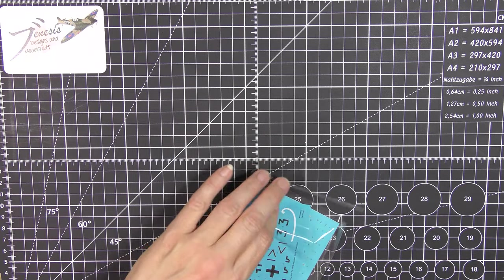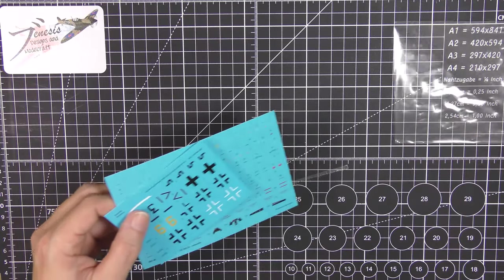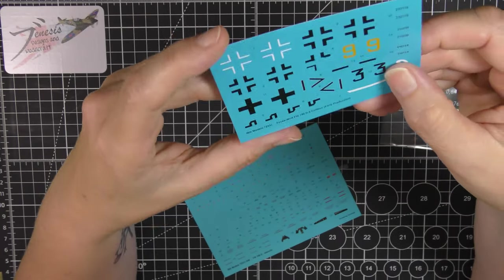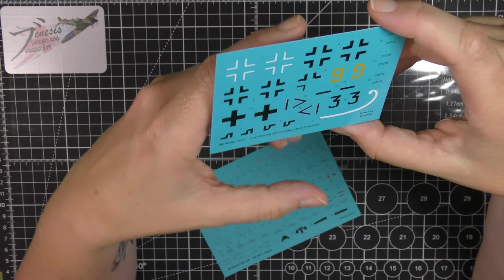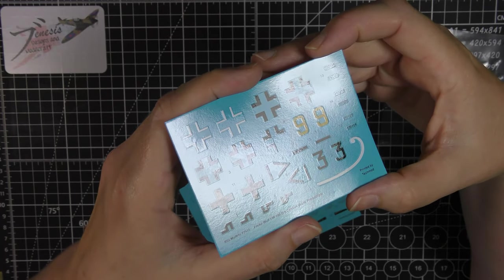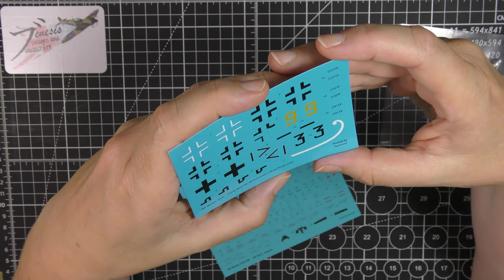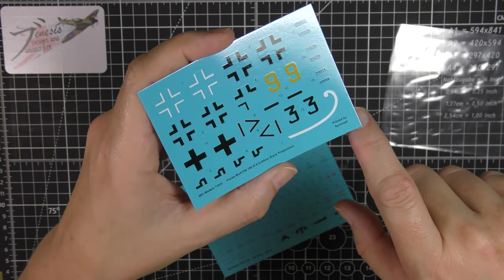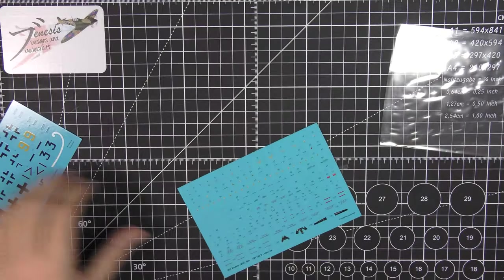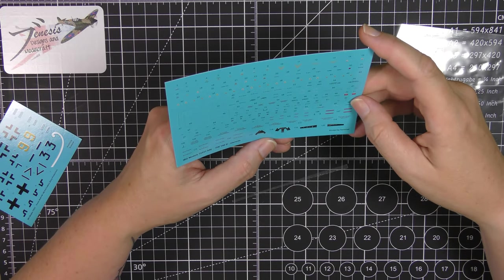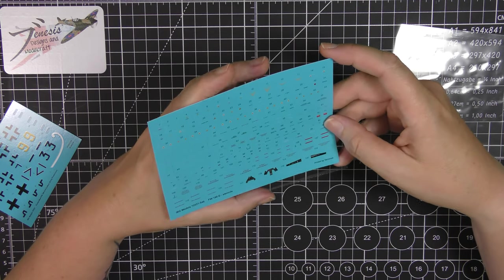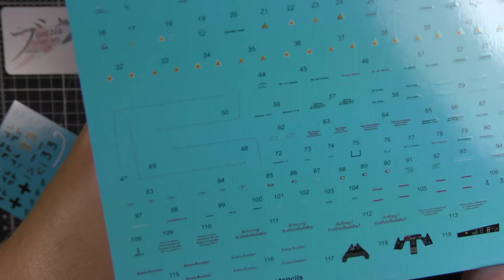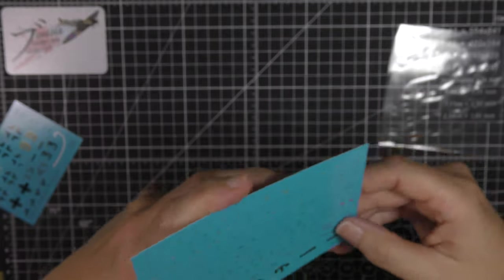Decals themselves then. Quite a comprehensive sheet. Those are your main markings, pretty simple. Obviously swastikas are included but they're in halves to satisfy laws in some places. These decals are printed by Tech Mod. They're really good, very very thin. You may if you're not careful have issues with these kind of curling up on themselves because they're so thin, but all that I've used before have always been very very good. Spinner spiral as well. And then this sheet is entirely stencil data right down to the fuel tanks, instrument panels and consoles, the head armor plate, everything, no step markings for the wings, all there. Very very nice sheet indeed.